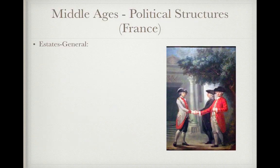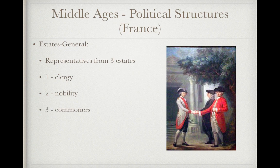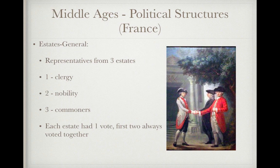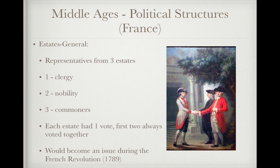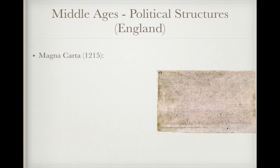Looking at political structures in France, the Estates General consisted of representatives from three estates: the First Estate (clergy), the Second Estate (nobility), and the Third Estate (commoners). Each estate had one vote, but the first two always voted together, outnumbering the commoners. This imbalance would become a major issue during the French Revolution.